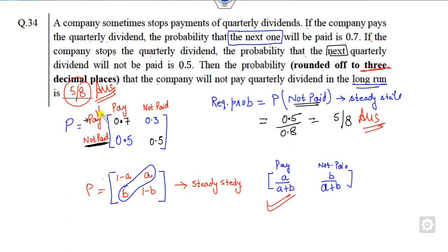Then the steady state of this first state, there is a pay is my A upon A plus B. And the non-paid will be my B upon A plus B. So that will be, you can get the right answer within 15 seconds in your examination.